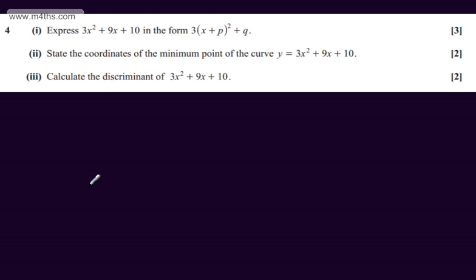This is question number four. In the first part for three marks, we're asked to express 3x squared plus 9x plus 10 in the form 3 multiplied by the quantity x plus p squared plus q.